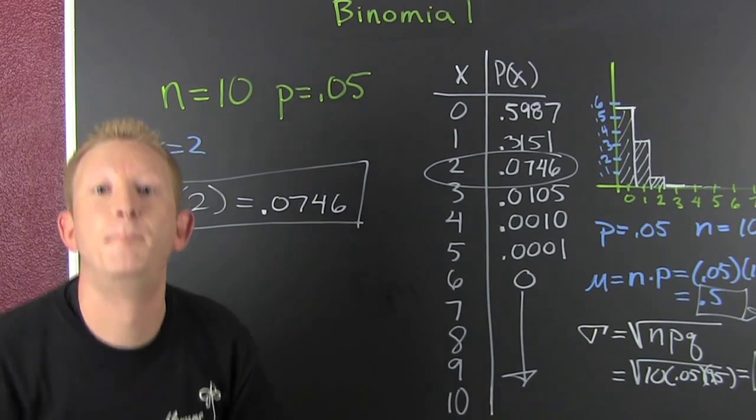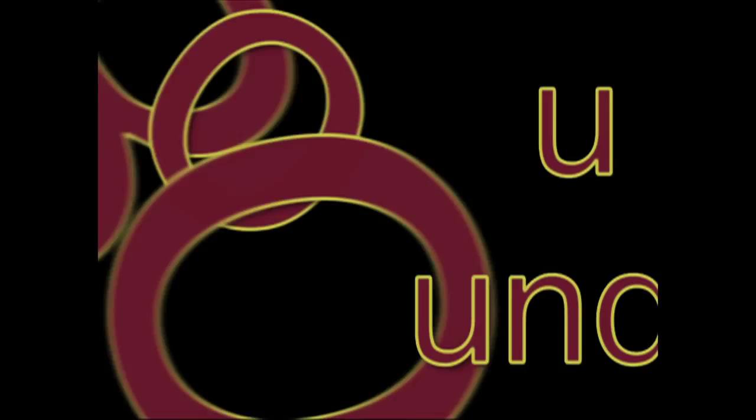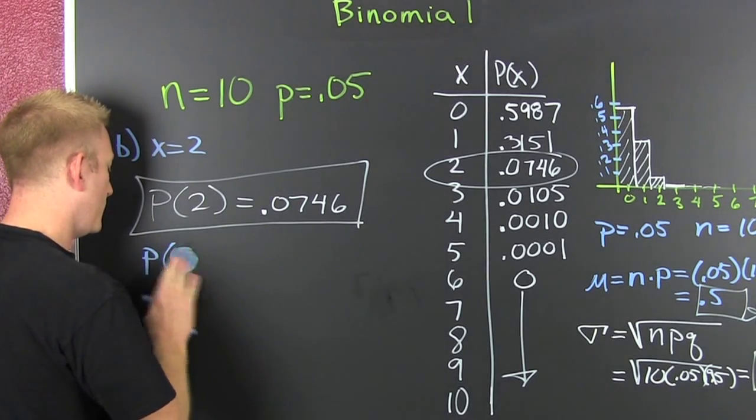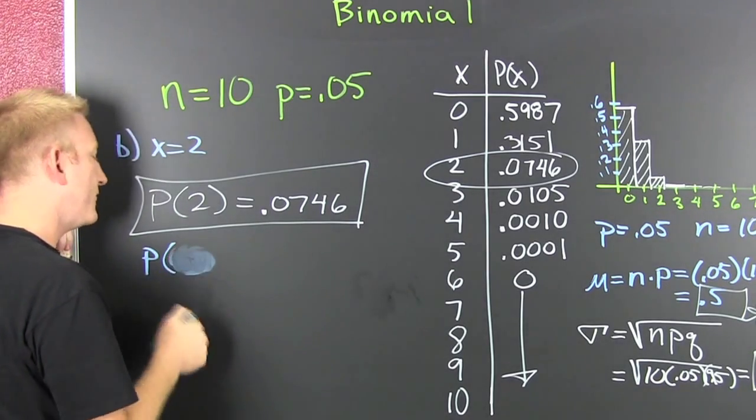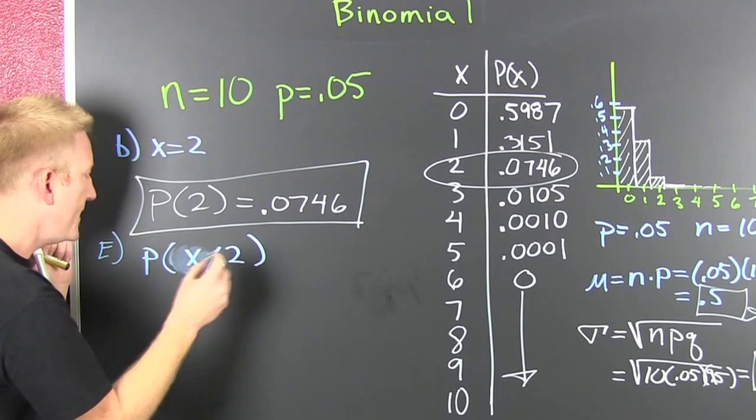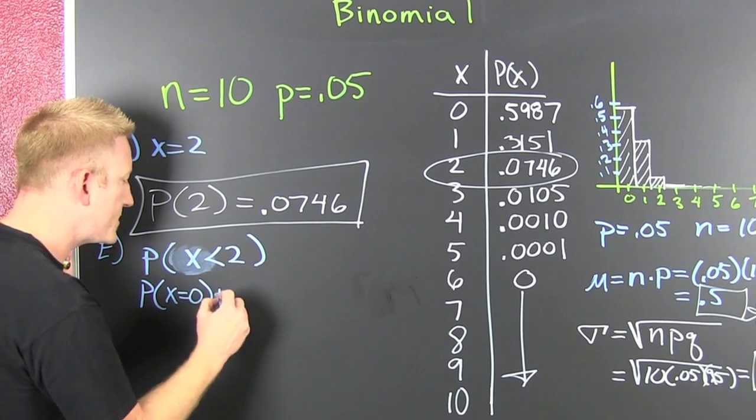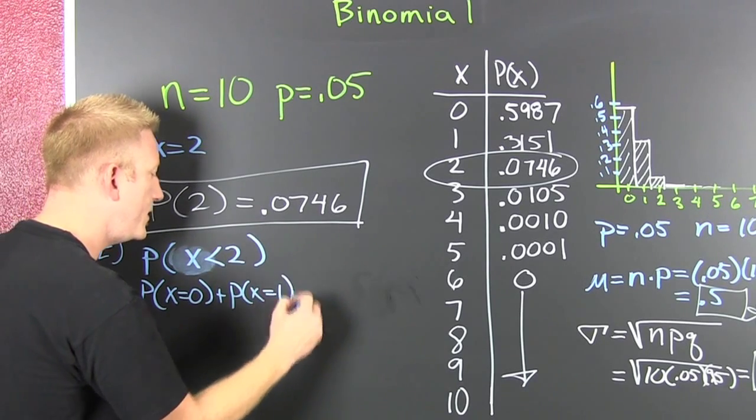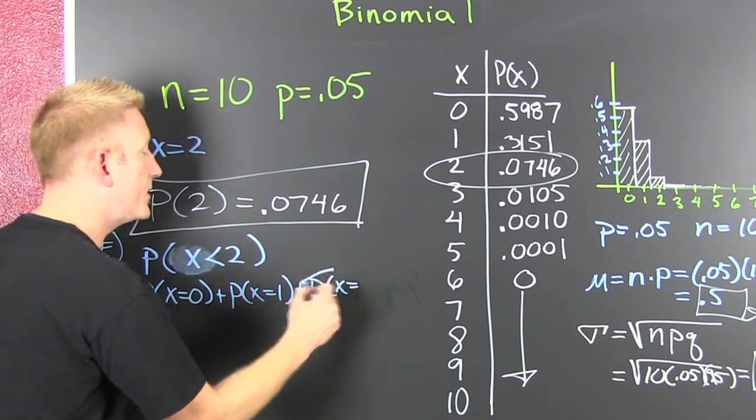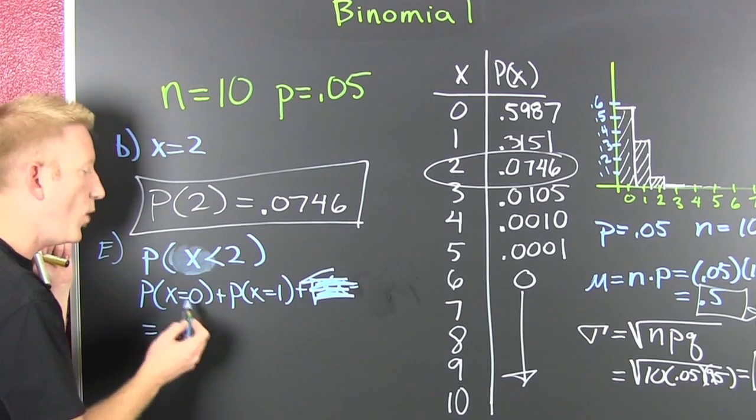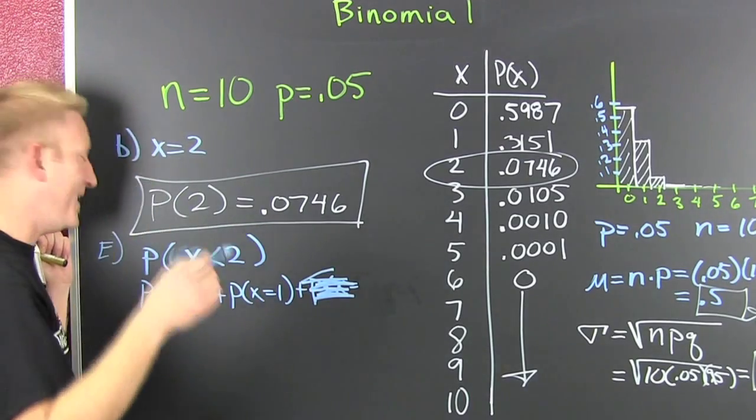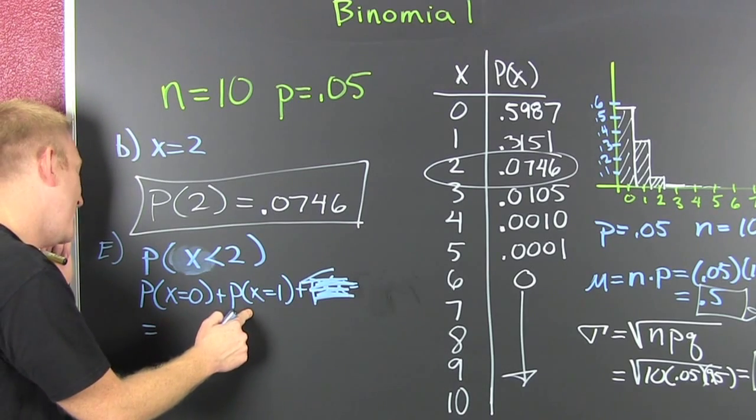But I'm not going to let you go there. Bonus round. What if we're looking for the probability that P of X is less than 2? That's the probability that X is equal to 0 plus the probability that X is equal to 1 plus the probability that X is equal to... Oh. That means it's an OR and I can add them.